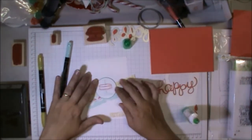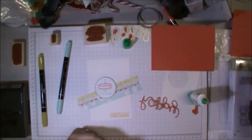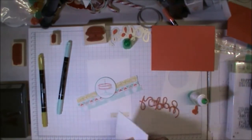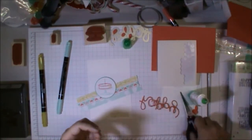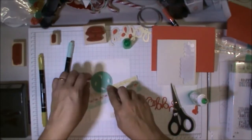I matted up the cake using a circle punch on some Coastal Cabana cardstock, and I popped that circle up with some dimensionals just to give a bit of texture to my card.